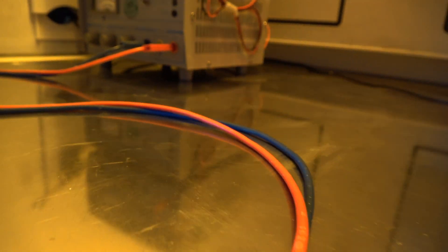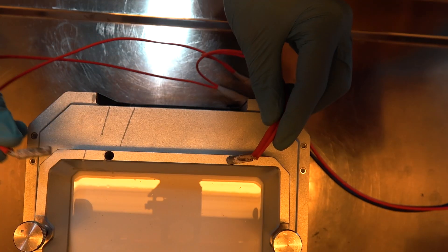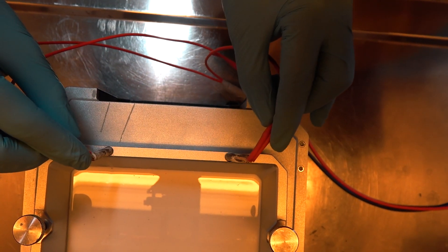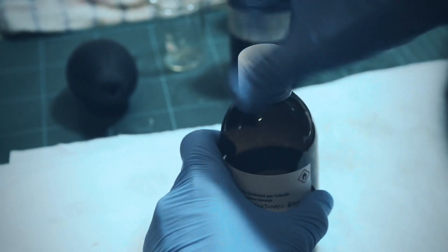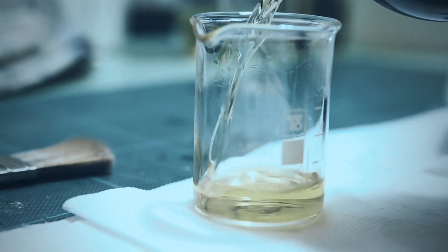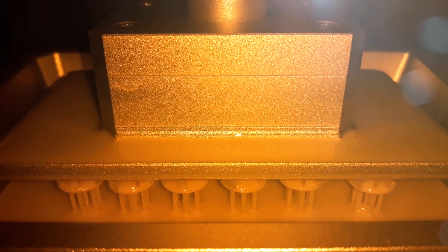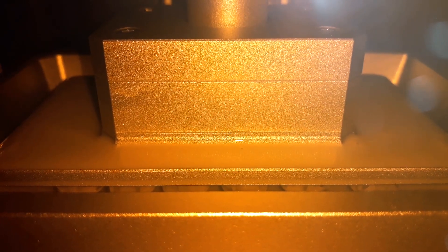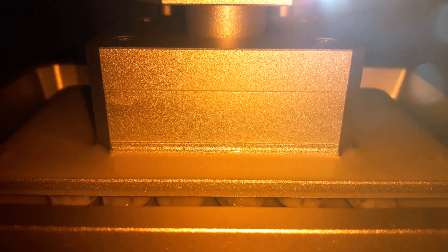Also, we integrate heating elements into the vat to increase its temperature and to reduce the viscosity of the resin. Because a resin with a lower viscosity flows much better, and it can fill up the space of a new layer much faster.